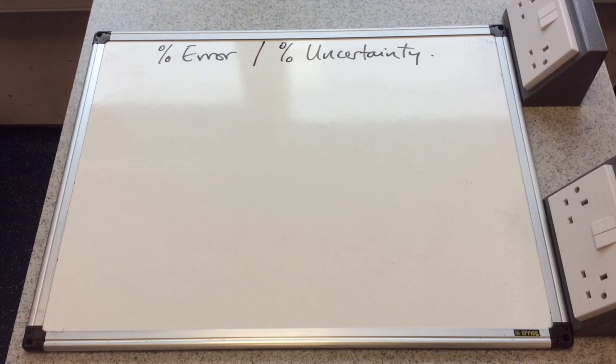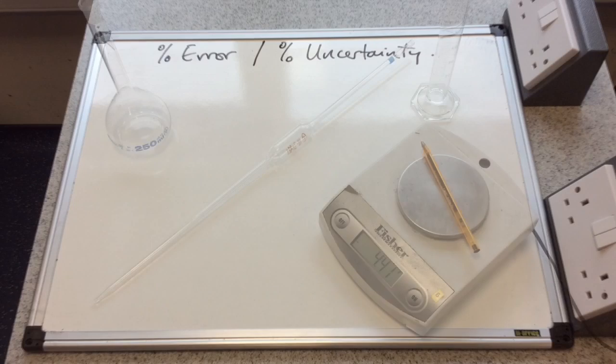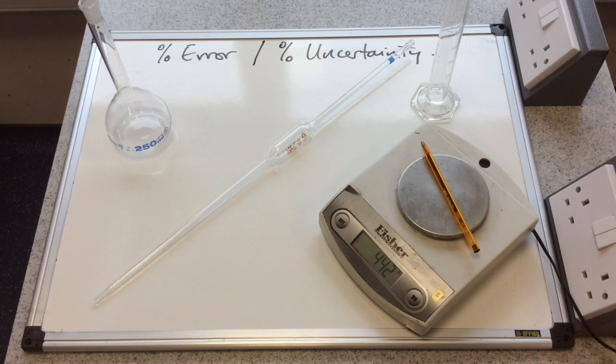In this video, I'm going to look at percentage error or percentage uncertainty. In chemistry, we use a lot of different apparatus to measure quantities of substances.